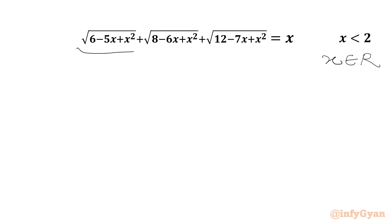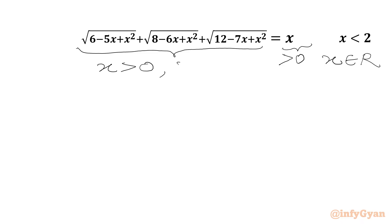As we have a sum of square roots on the left-hand side, our RHS must be positive. So we can write two conditions on x: x is greater than 0 and x is less than 2. So our answer must be in the interval 0 to 2.